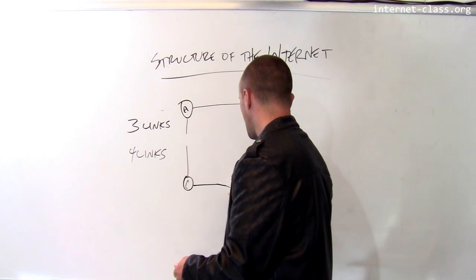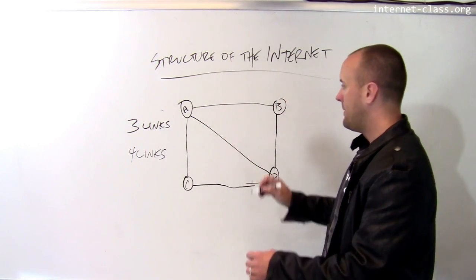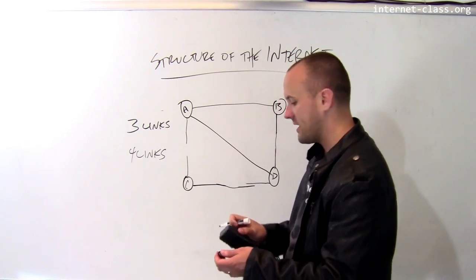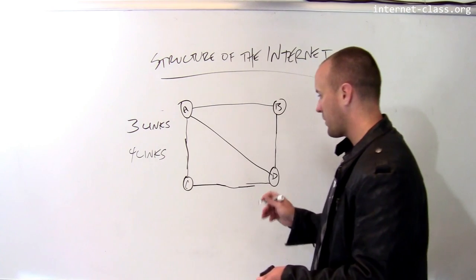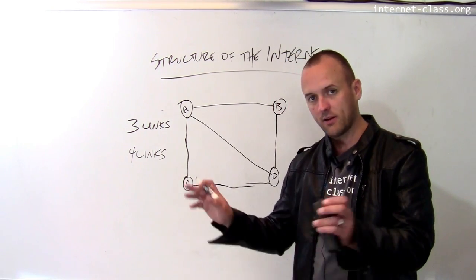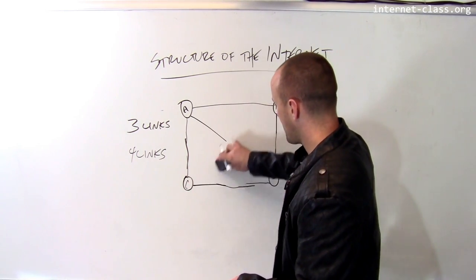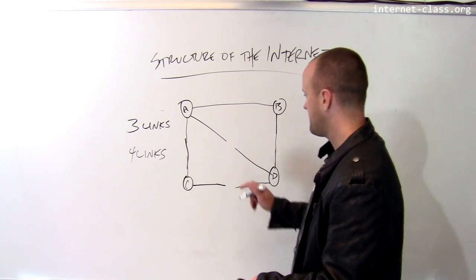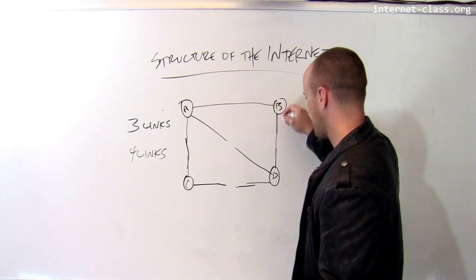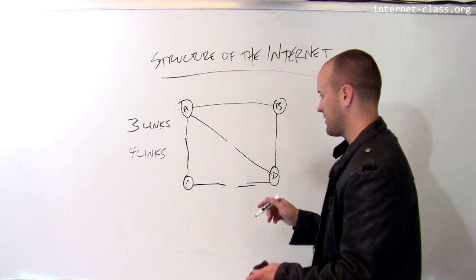If I want to tolerate two link failures, I have to create another link. Now I can tolerate two link failures, though it depends on which links are failing. If I cut off all the links to C, no matter how many other links are in the network, C will be disconnected. But in this network, for example, if this link goes down and this link goes down, the network is still fully connected. C can talk to A, which can talk to B this way and talk to D, and all the other computers can use these links and ignore the broken ones.